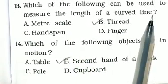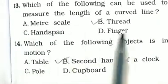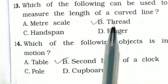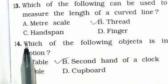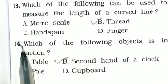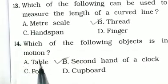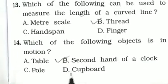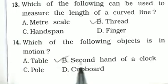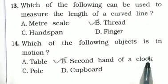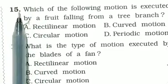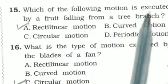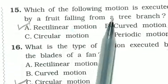The following can be used to measure the length of a curved line: A. meter scale, B. thread, C. handspan, D. finger. The right answer is thread. Which of the following objects is in motion? A. table, B. second hand of a clock, C. pole, D. cupboard. Right answer is B. second hand of a clock. Question 15: Which motion is executed by a fruit falling from a tree branch?